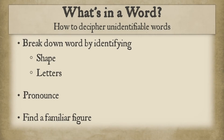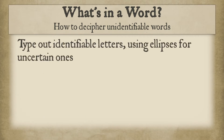When transcribing, some words will require more individual attention than others. This step addresses methods that can help you decipher unidentifiable words. Type out the letters you can identify, using ellipses as placeholders for ones you cannot.